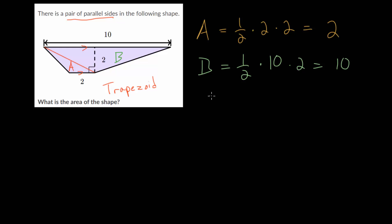So we can say our total area of this composite shape, this trapezoid, is the sum of these A plus B, which is two plus 10, which is 12. And we can just say this is square units because we weren't given a specific unit.